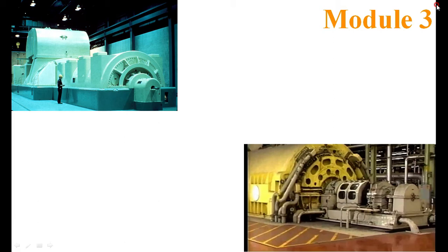We start with module number 3. Module number 3 consists of a continuation of the three-phase transformer, then the DC generator — including armature reaction and the commutation process. The third part covers the alternator: representing it with an equivalent circuit diagram, armature reaction, leakage reactance, armature reactance, and synchronous reactance. These are the portions covered in module number 3.